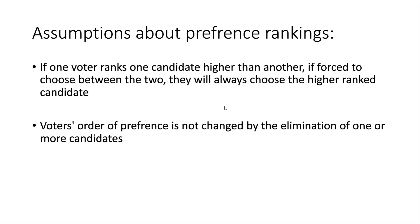Now let's talk about some assumptions we have to make about preference rankings, which will be important for the next video. The first assumption is: if one voter ranks one candidate higher than another, when forced to choose between the two, they will always choose the higher-ranked candidate. The second assumption is that voters' order of preference is not changed by the elimination of one or more candidates.